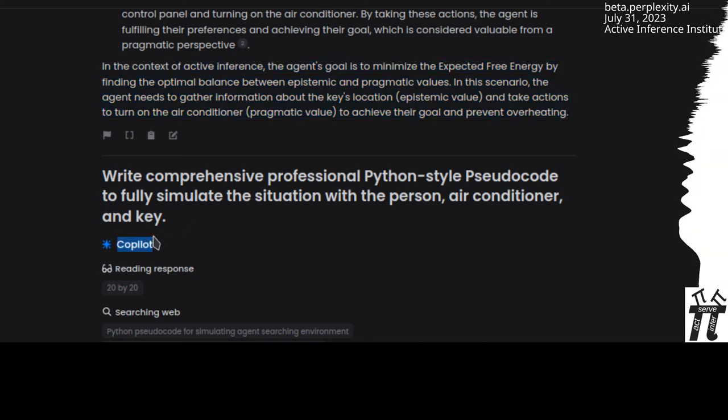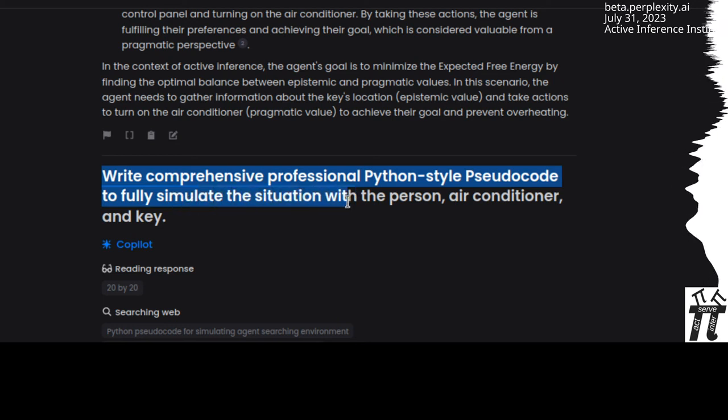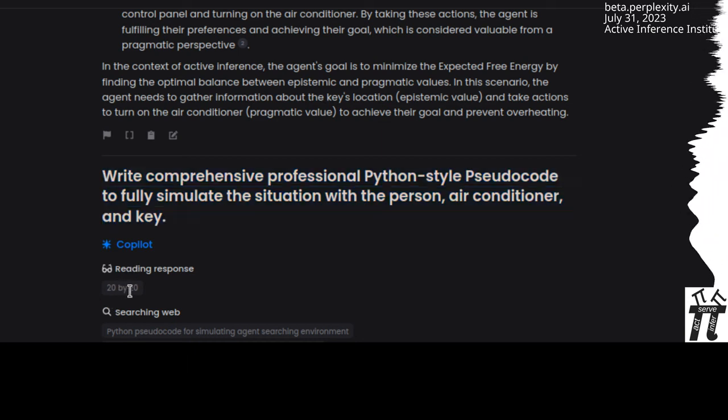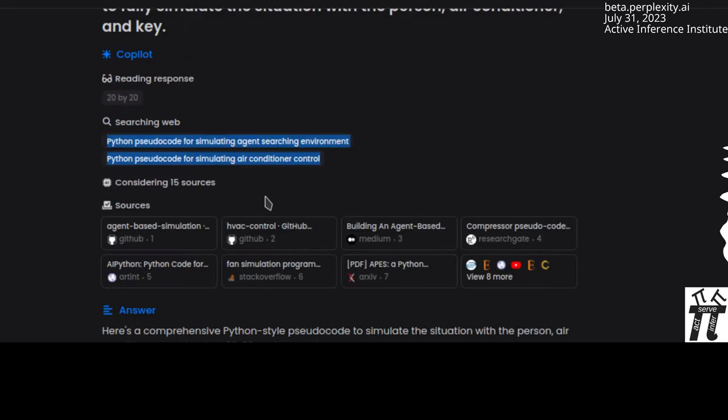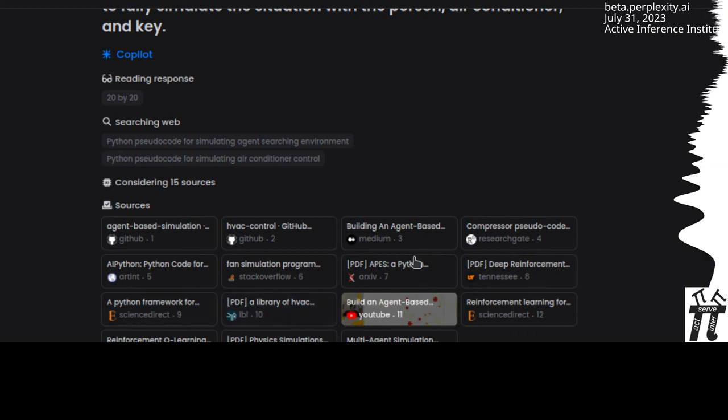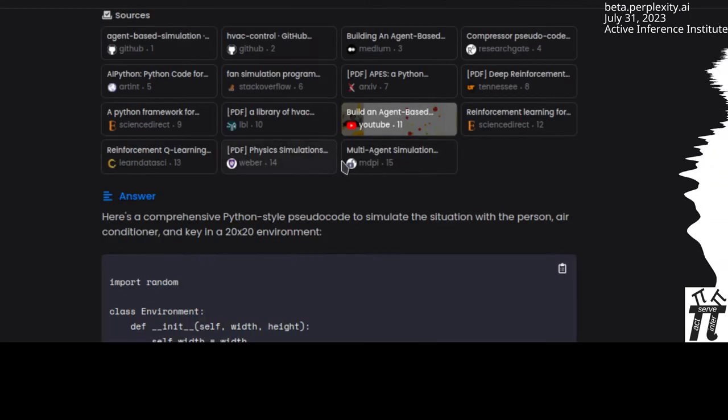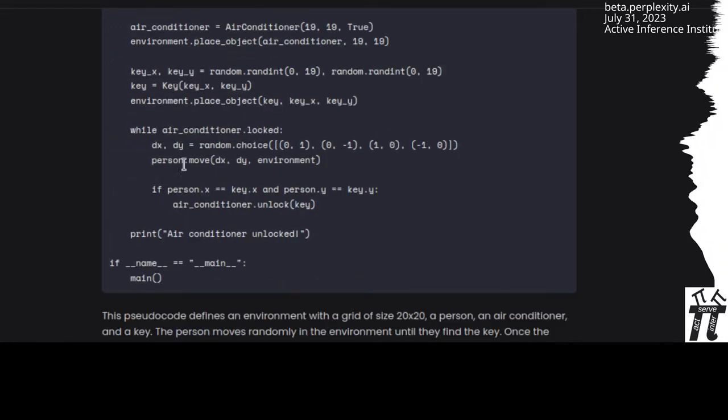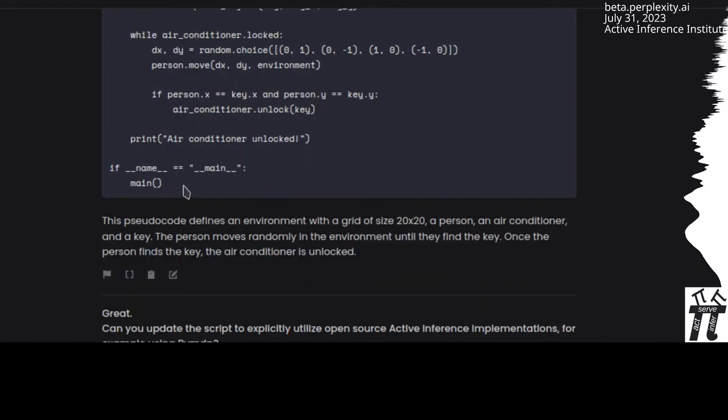With copilot, I asked write comprehensive professional Python-style pseudocode to fully simulate the situation with the person, air conditioner, and key. It asked for more information on what size I wanted the world to be. I said 20 by 20. It looked up some related terms, discovered some agent-based modeling repos, wrote a Python-style script. I didn't run it, I just kept going.